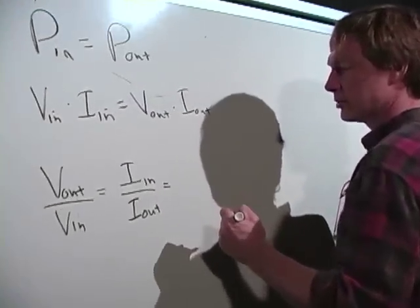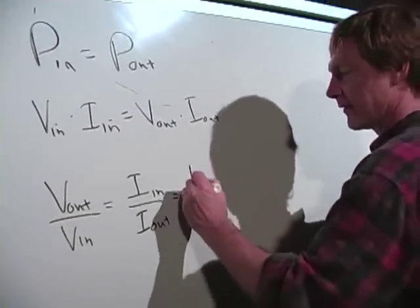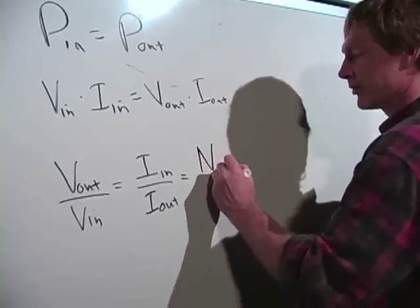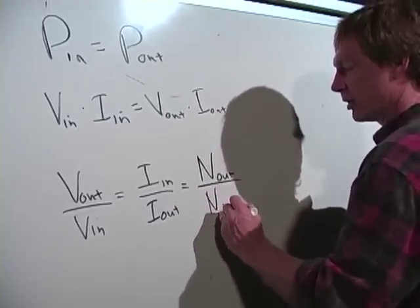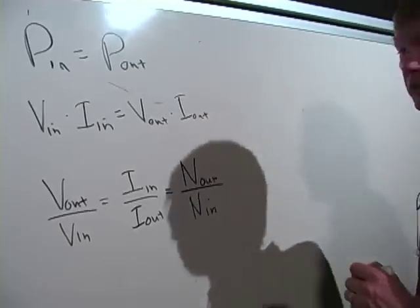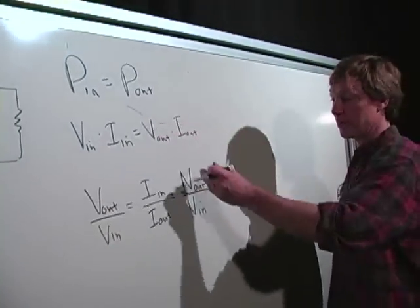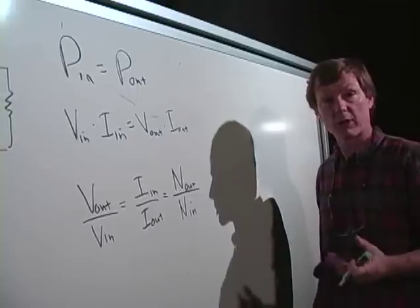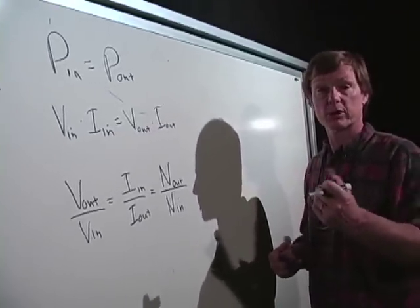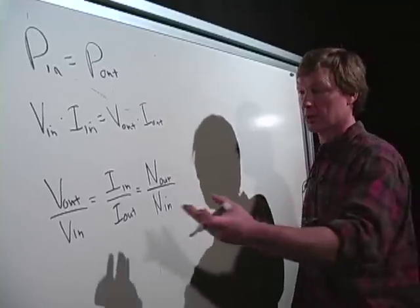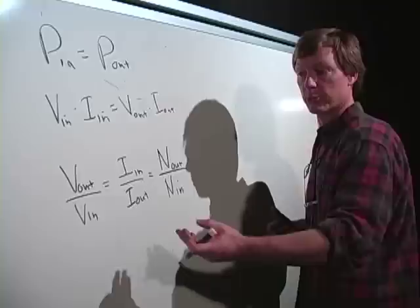So that's equal to, let's see, the number of coils on the output side over the number of coils on the input side. If the number of coils on the output side is bigger, it's a step up transformer. My voltage will go up. If the number of output coils is smaller than the input, it's a step down transformer because my voltage output will be less.